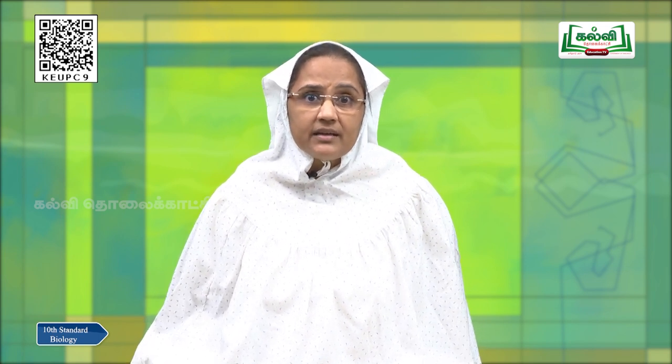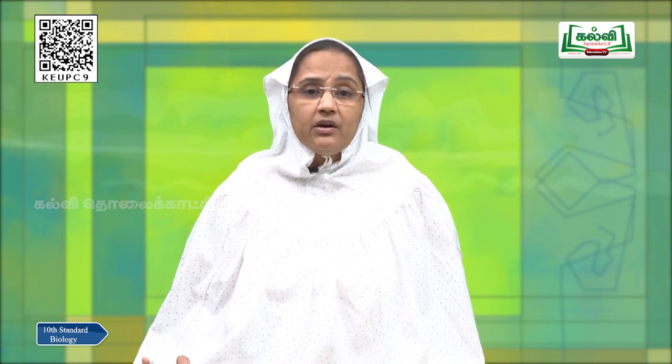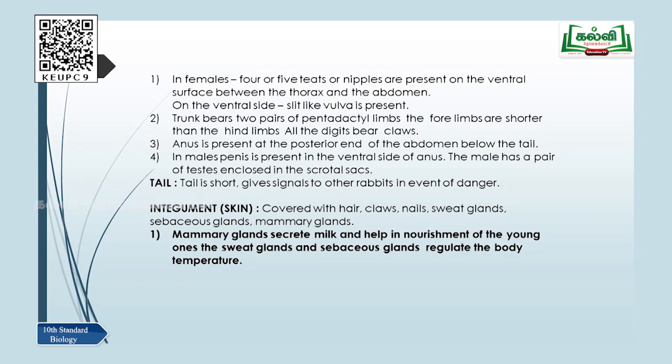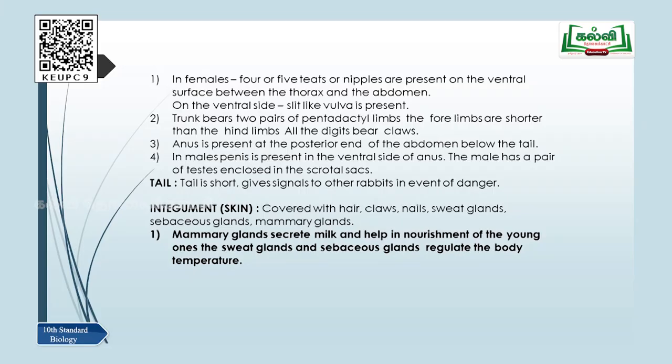The trunk bears two pairs of pentadactyl limbs. The forelimbs are shorter than the hind limbs, and all limbs have digits which bear claws. The anus is present at the posterior end of the abdomen, below the tail, and is connected to the rectum to expel waste excretory products. In males, the penis is present on the ventral side of the anus, and males have a pair of testes enclosed in the scrotal sac, which produces sperm. The tail is short and gives signals to other rabbits in the event of danger.